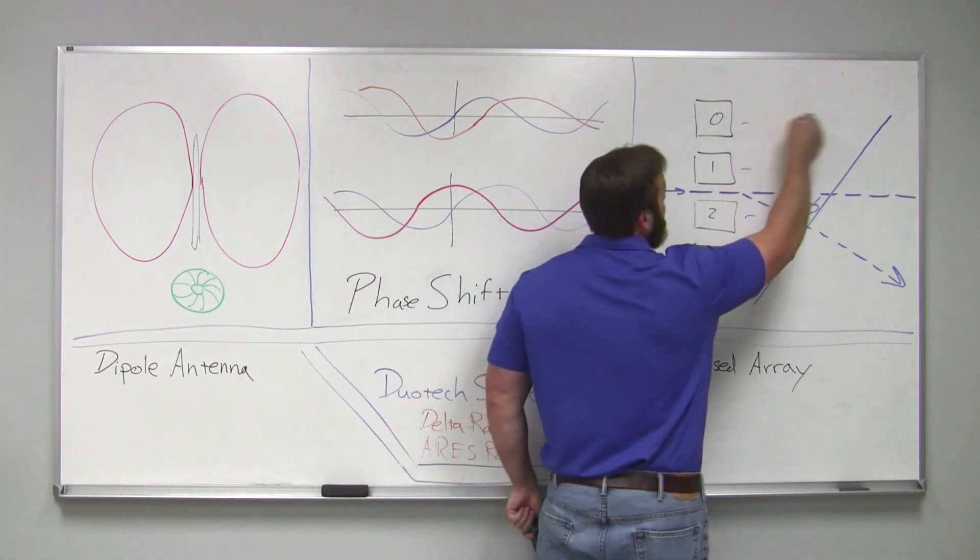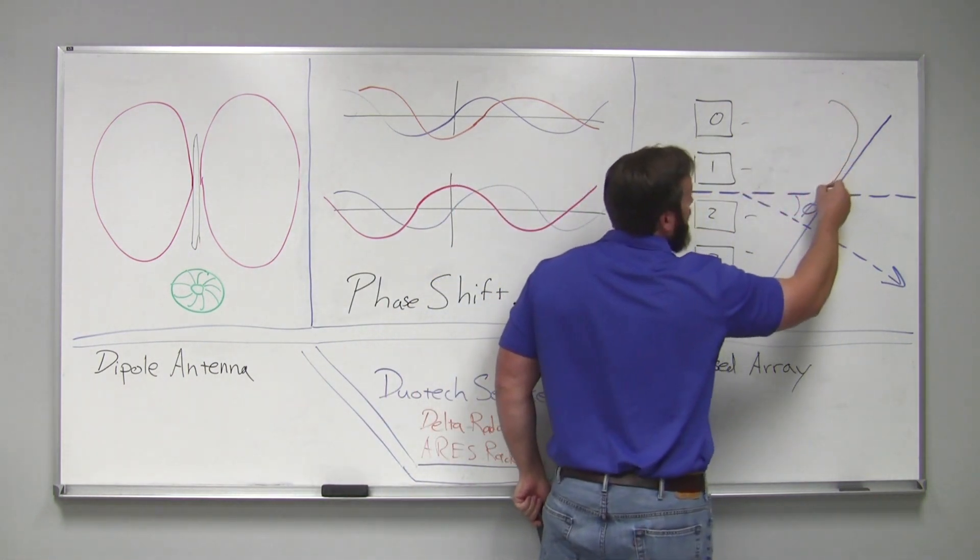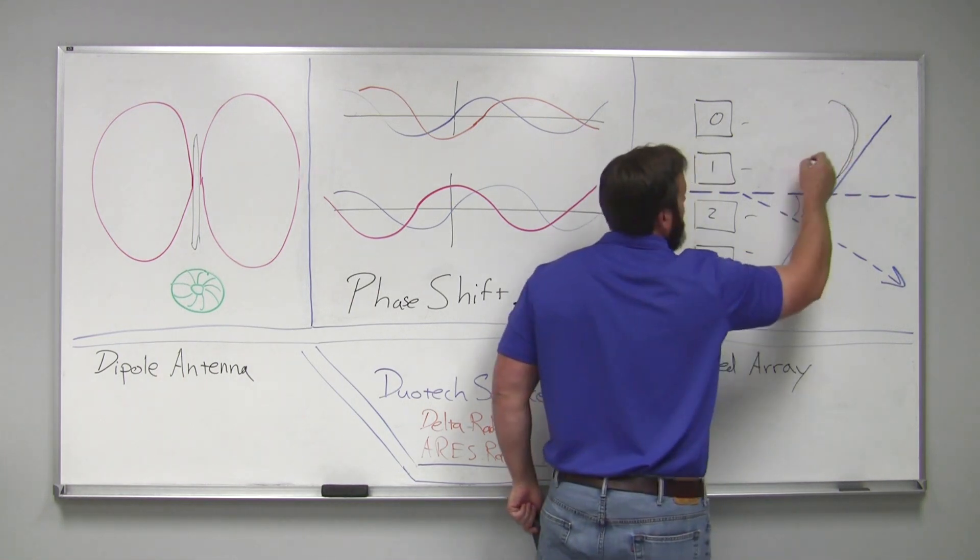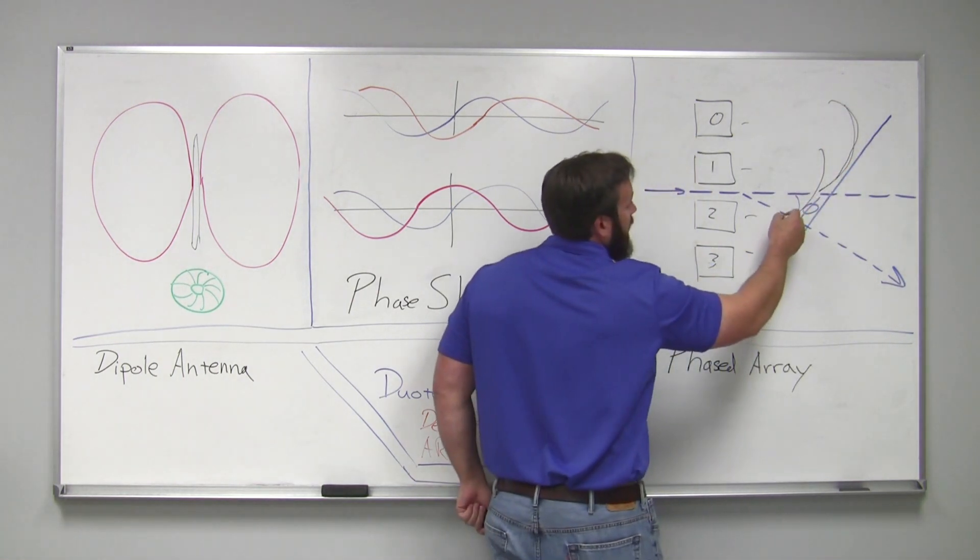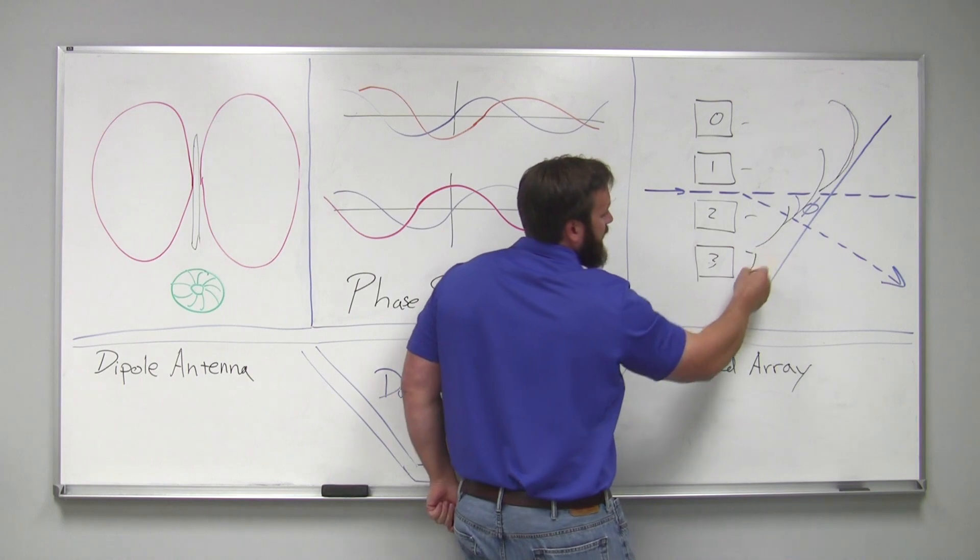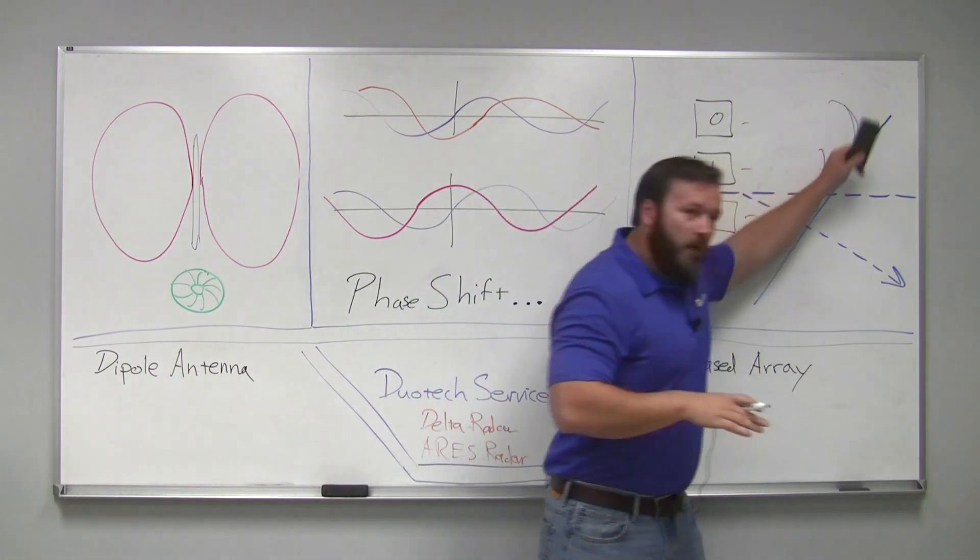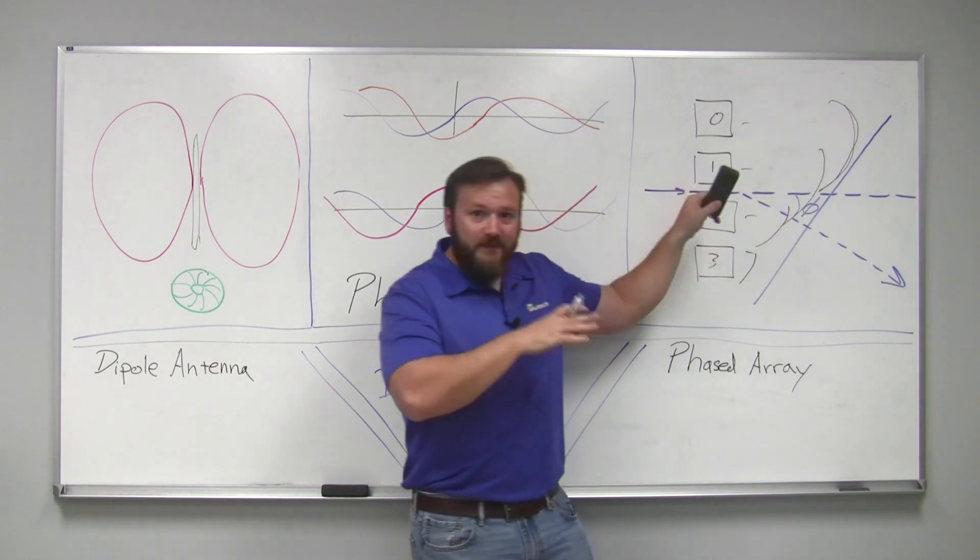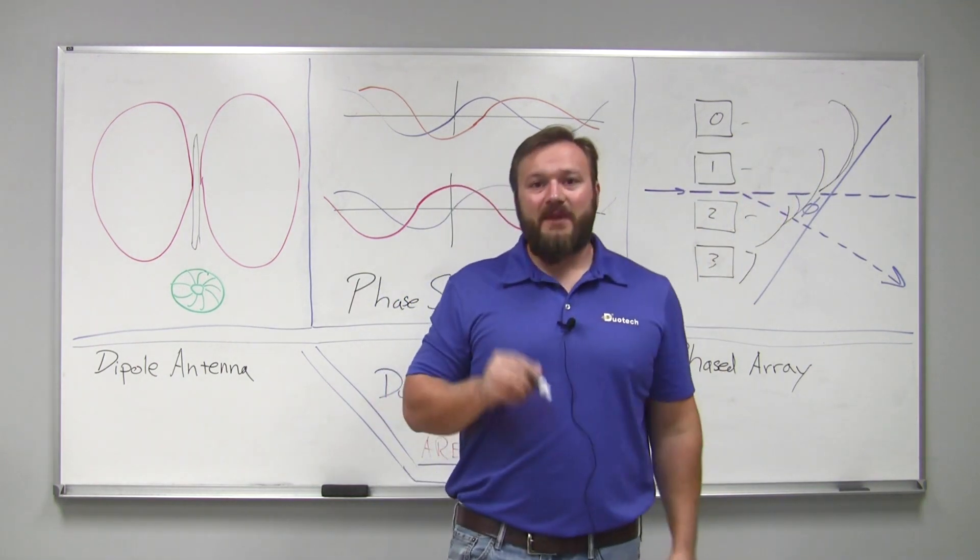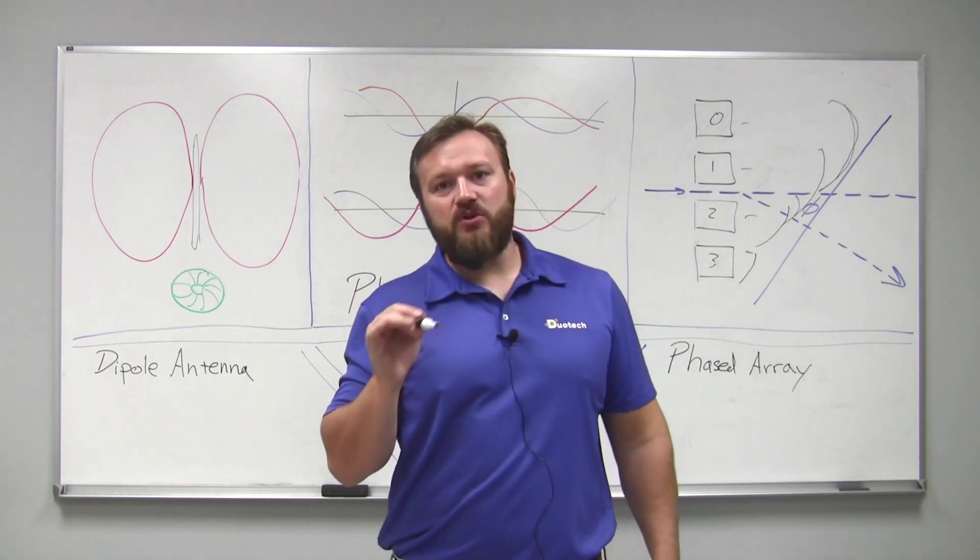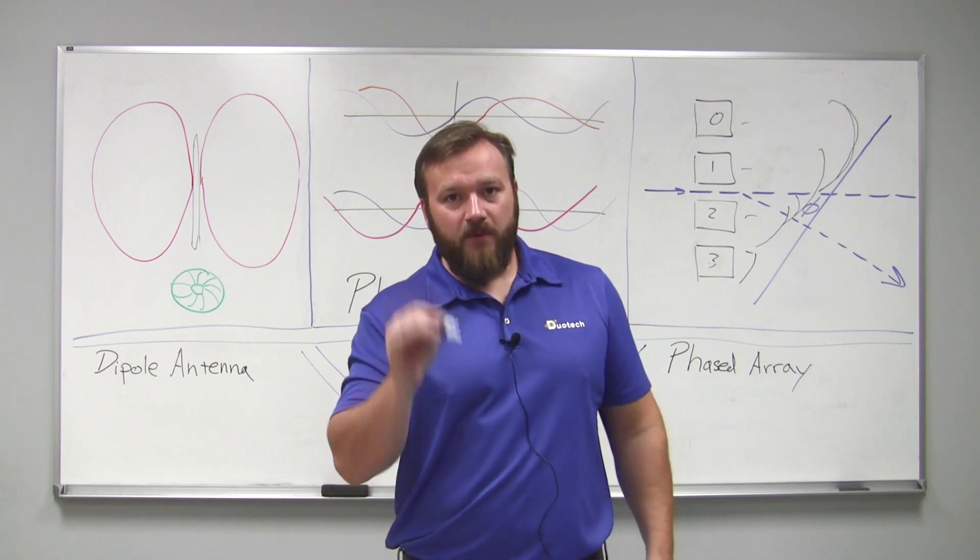An electronically scanned array is one that utilizes phase shifts in order to move a beam in a different direction. If I have a wave front coming out from here, and I send one out at one time, another one out at another time, another at another time, I can shift the phase and move the wave front by simply individually controlling the phase shift for that antenna.